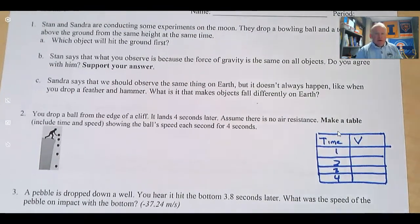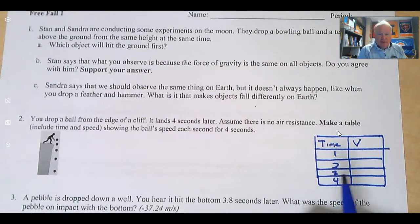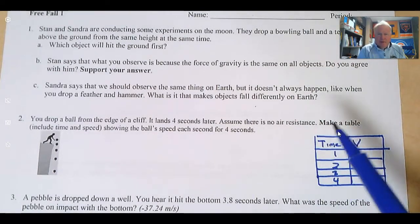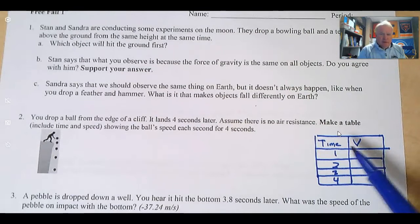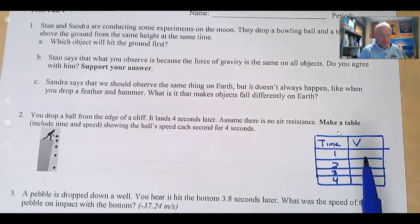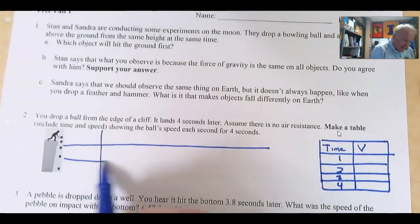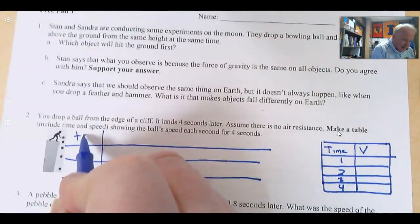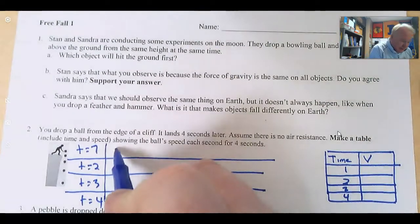The second one asks you to create a chart. It says a ball is dropped from the edge of a cliff. Remember, when we drop a ball, its velocity is zero. It lands four seconds later. Assume there is no air resistance. Make a table. A lot of people read this and say, oh my God, I can't do this problem. So let's just learn how to attack a problem when we don't really know exactly what they're asking. They're saying make a table including time and speed. So here's time and velocity or speed, showing the ball speed each second for four seconds: one, two, three, and four.